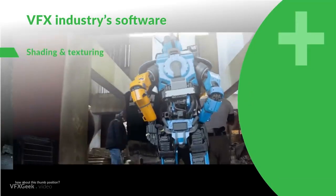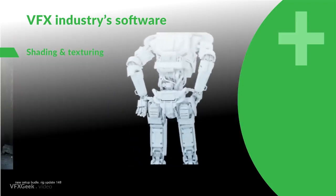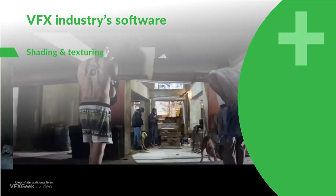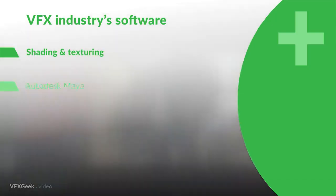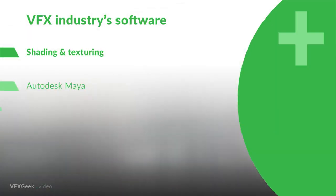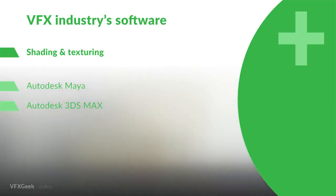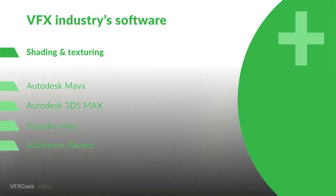Texturing and Shading. For shading, usually the same software is used as for modeling — that means Autodesk Maya as the most popular one, and Autodesk 3D Studio Max — both featuring a node-based shading system. Additionally, textures are created with Foundry Mari, Substance Painter (recently acquired by Adobe), and of course Adobe Photoshop.